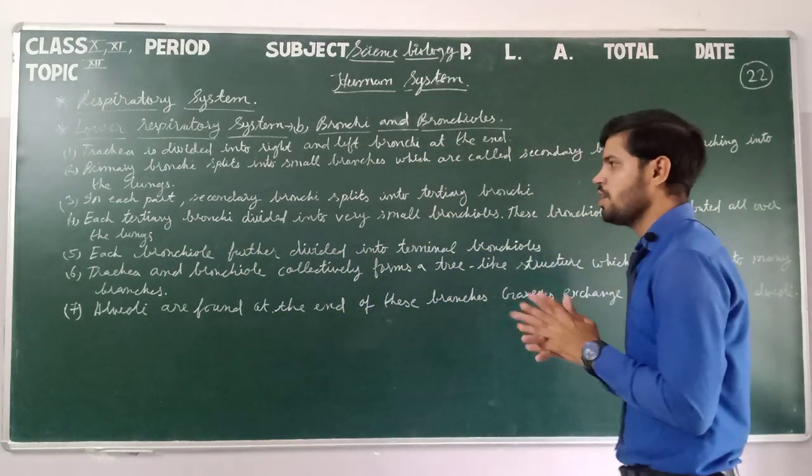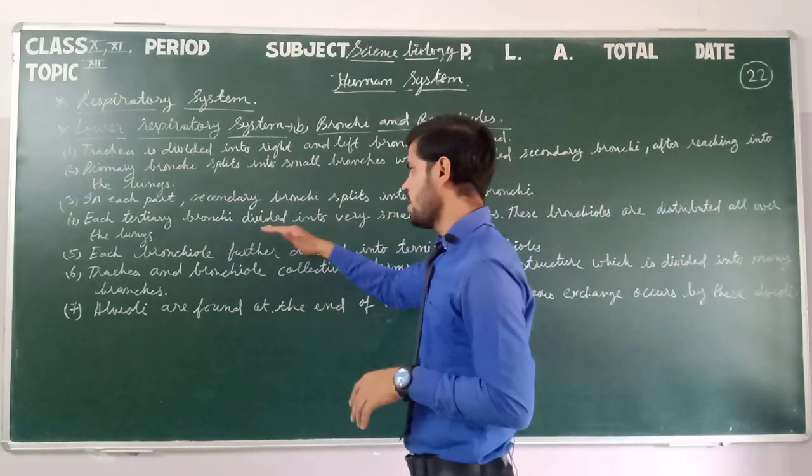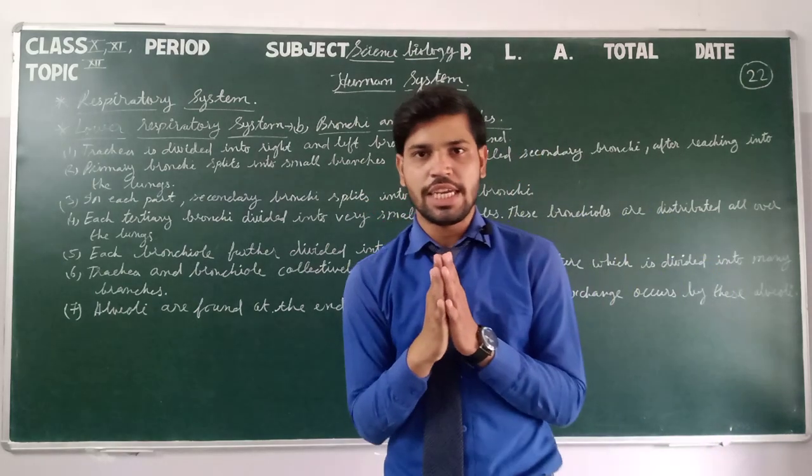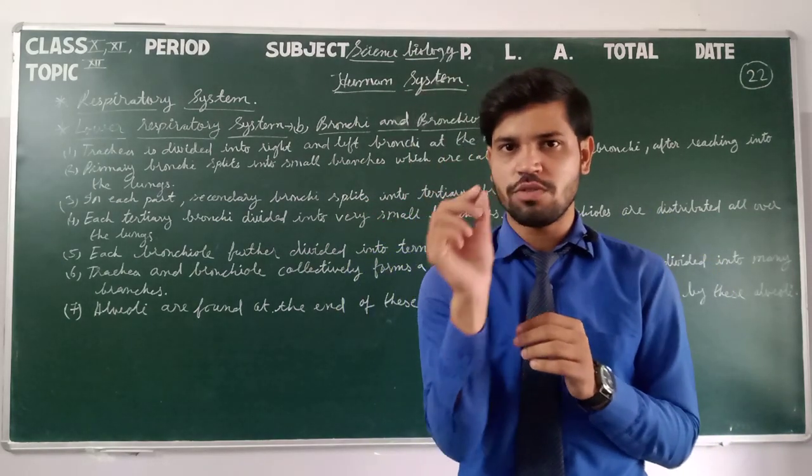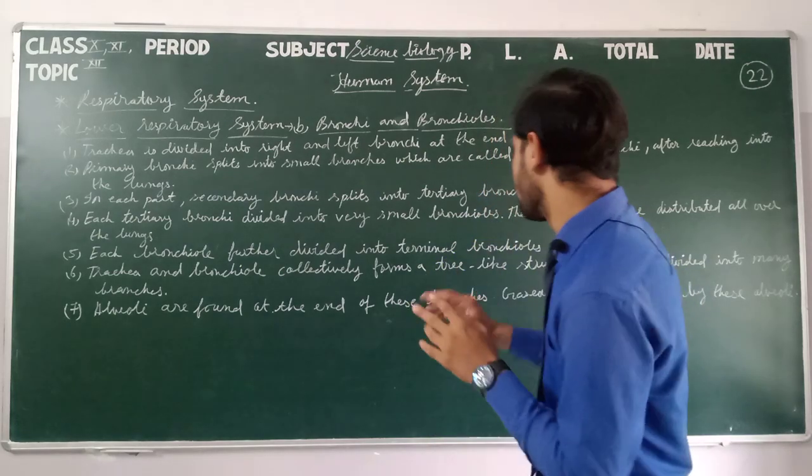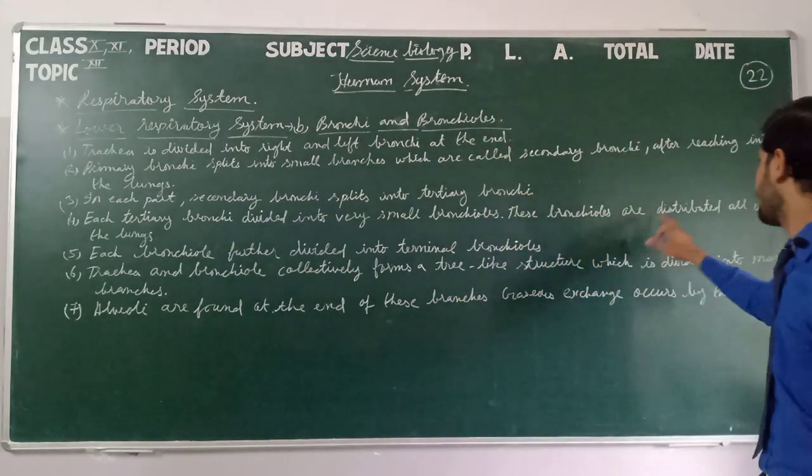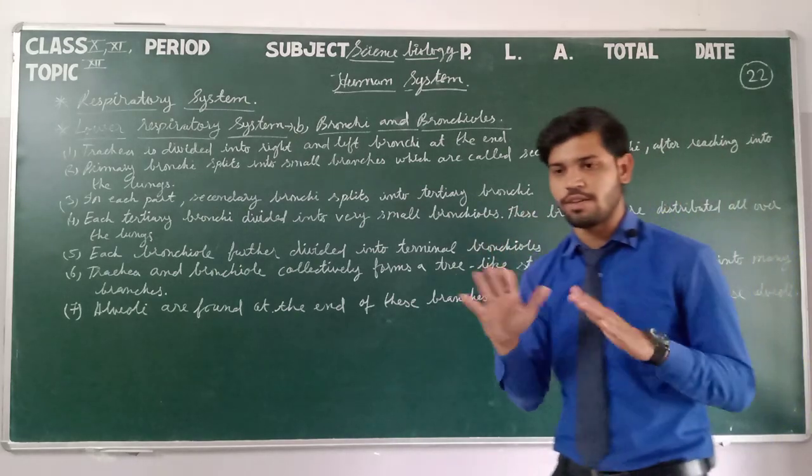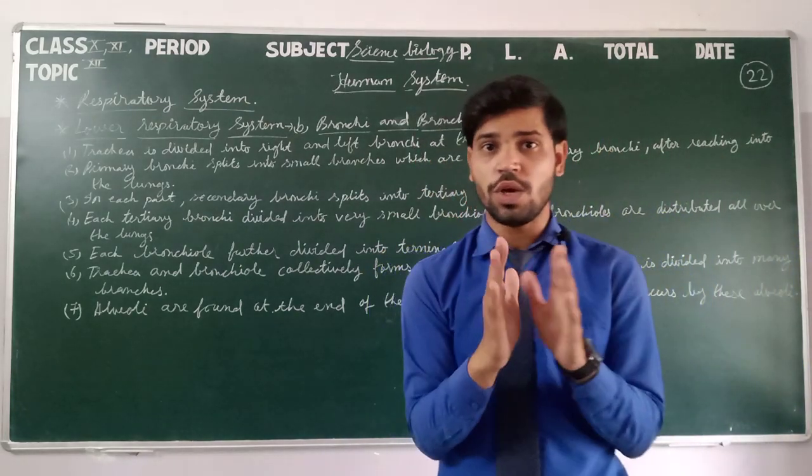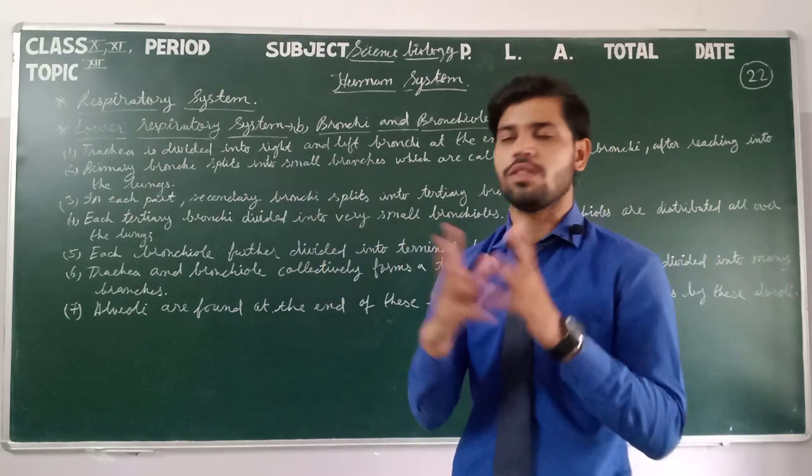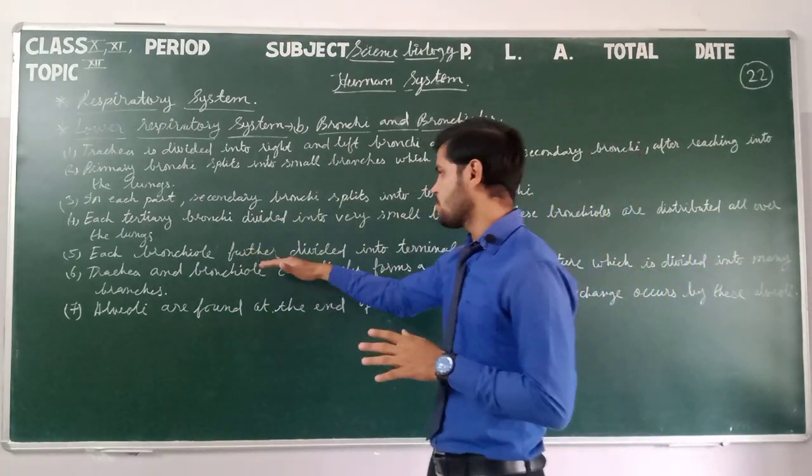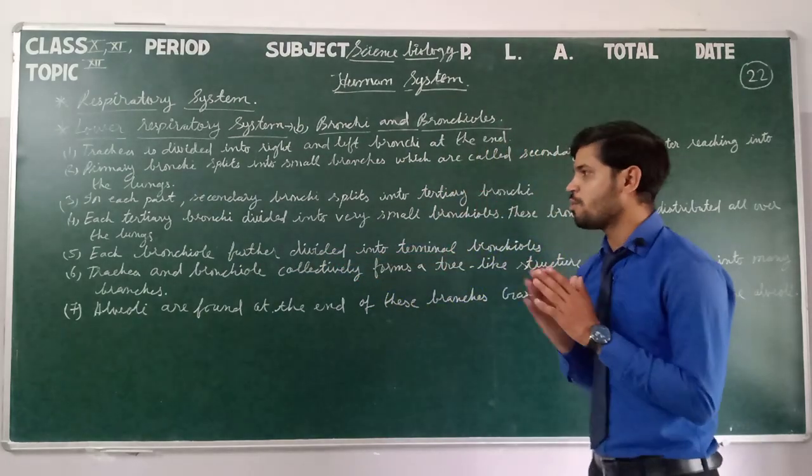Fourth point. Each tertiary bronchi is divided into very small bronchioles. These bronchioles are distributed all over the lungs.